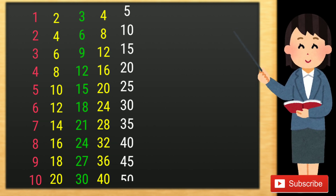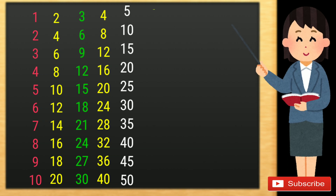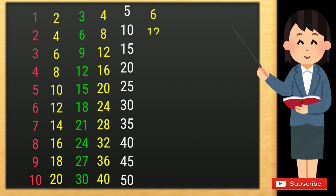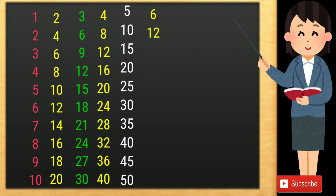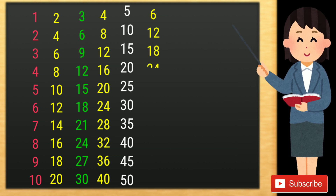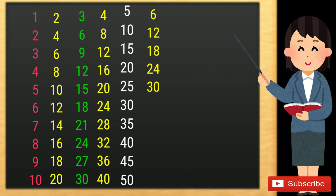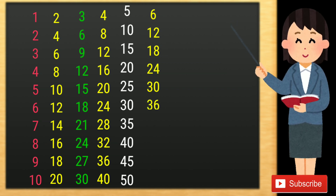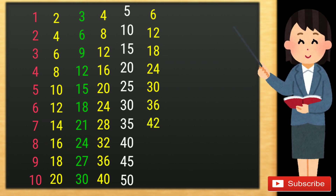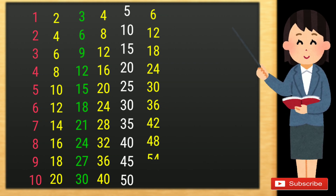5 10s are 50. 6 1s are 6, 6 2s are 12, 6 3s are 18, 6 4s are 24, 6 5s are 30, 6 6s are 36, 6 7s are 42, 6 8s are 48, 6 9s are 54.